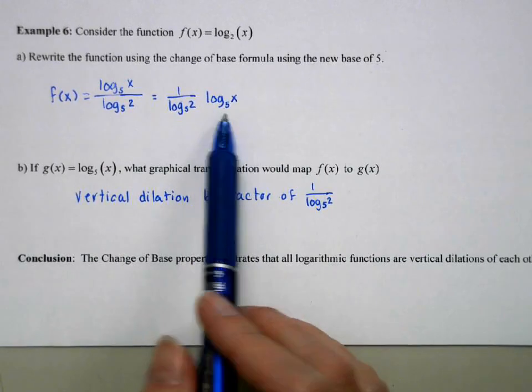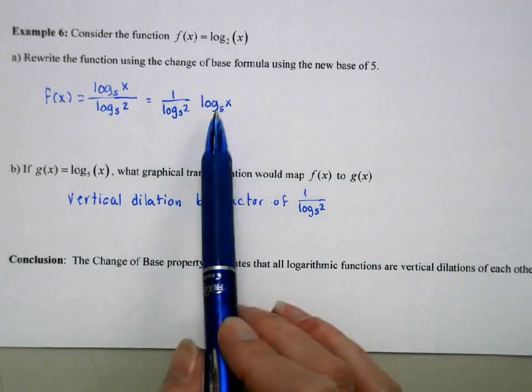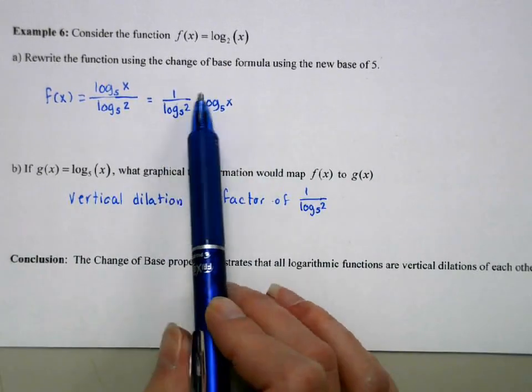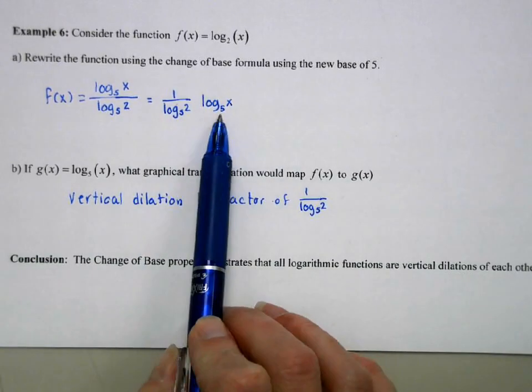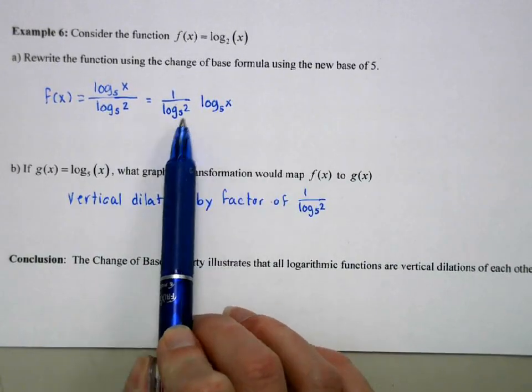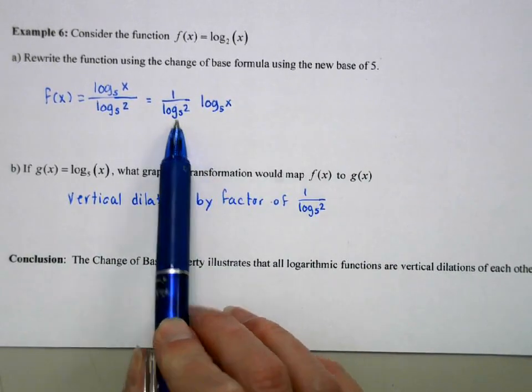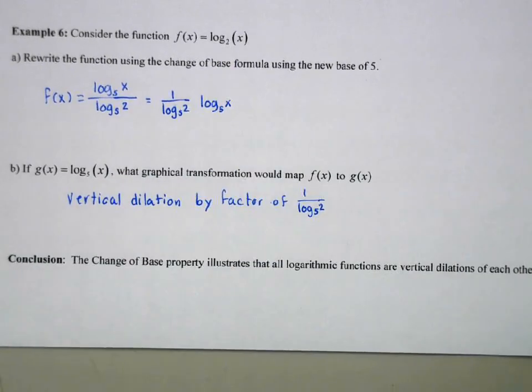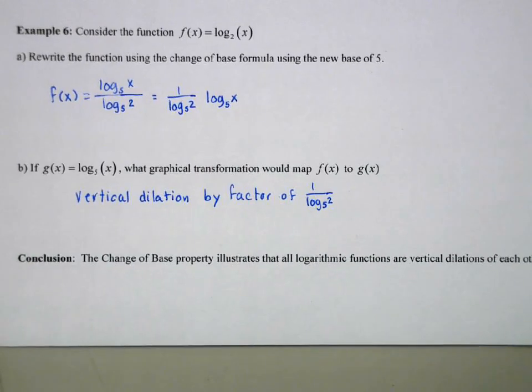So this is log base 2, this is log base 5, but these are equivalent statements so I could graph this with this vertical dilation and this works with all bases. So anyway, just some little relationships between the properties of logs and how that kind of plays out graphically. Thank you for watching.